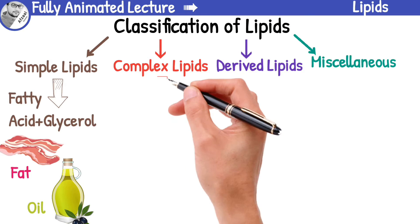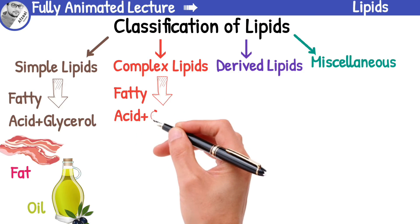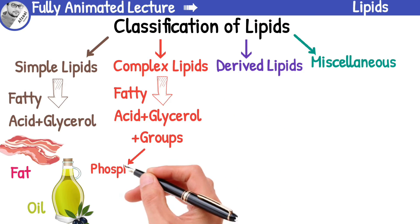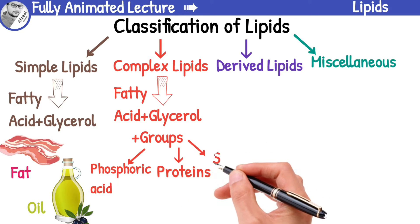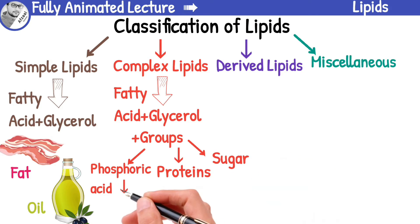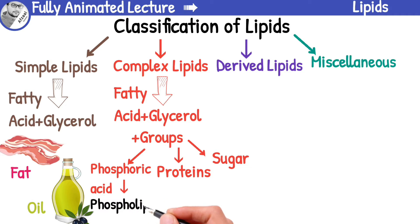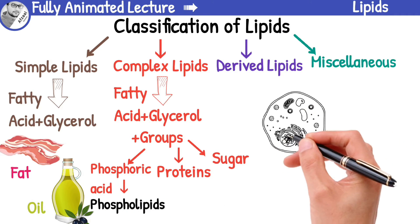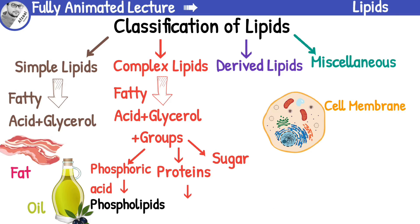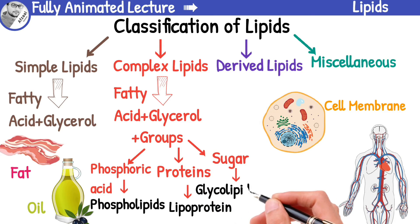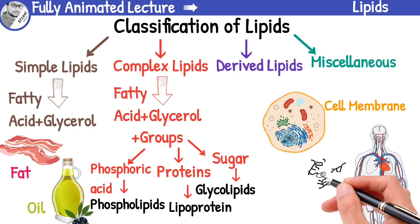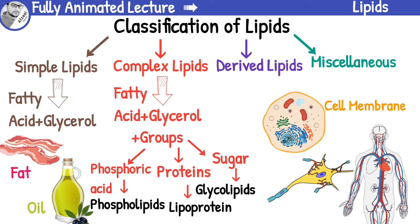Complex lipids are made up of fatty acids, glycerol, and other groups like phosphoric acid, proteins, or carbohydrates. Complex lipids that contain phosphoric acid are known as phospholipids — they are the building blocks of our cell membranes. Complex lipids that contain proteins are known as lipoproteins, and they are responsible for transporting fats and cholesterol throughout our bodies. Lipids containing sugar molecules are known as glycolipids, and they play an important role in cell signaling and communication.